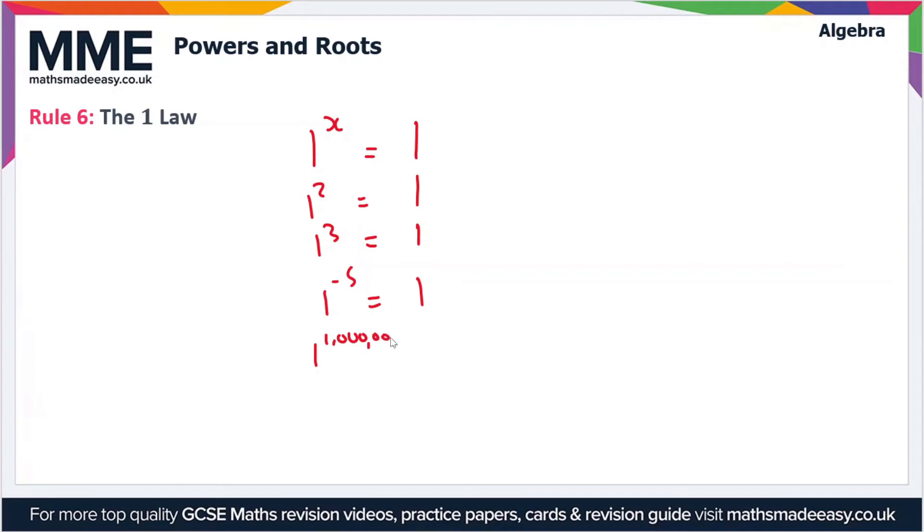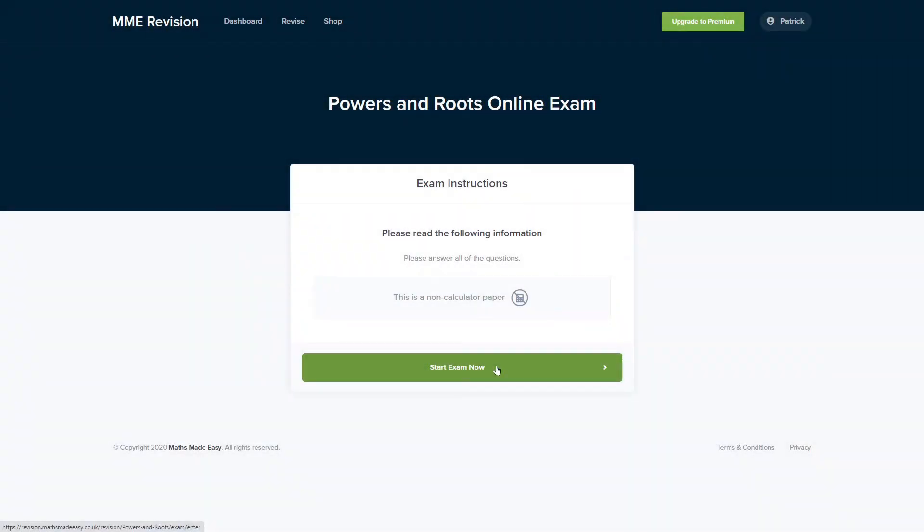That is equal to also one. It could also be decimals, for instance 0.5. So one to the power anything is always equal to one.